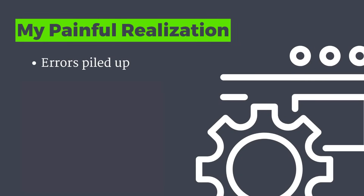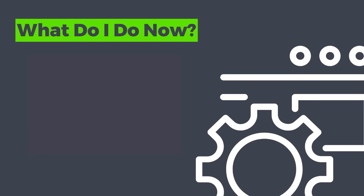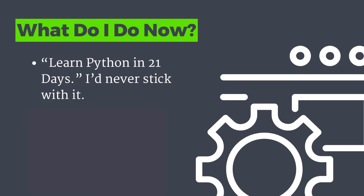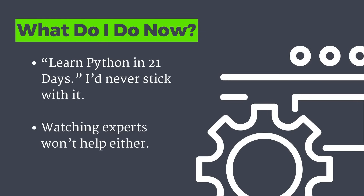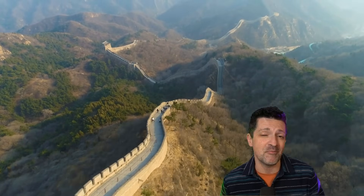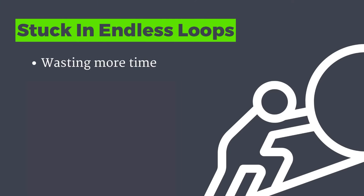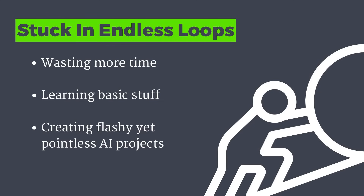This mindset has been really holding me back from getting to the next level in my AI journey. I really don't want to become a developer, but I really want to build cool stuff for myself, for my team, and for you guys. So as I was watching these errors pile up, I said to myself out loud: if I actually want to build anything useful, I have to know what this code is doing. I know that I don't want to start programs like "Learn Python in 21 Days" — I just won't stick with it.